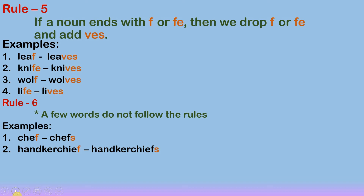Some more examples: 'knife' — K-N-I-F-E — ends with letters FE. To make its plural form, we drop the letters FE and write VES — knives. One more example: wolf becomes wolves, and life becomes lives.